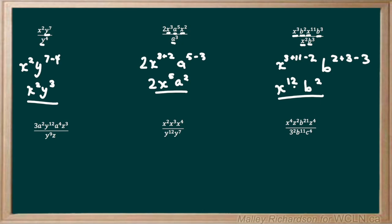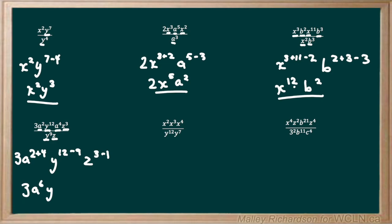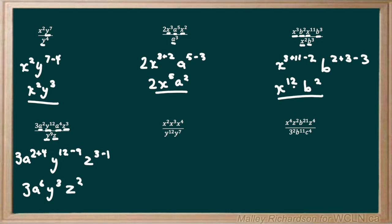For the next example we have 3 times a to the 2 times y to the 12 times a to the 4 times z to the 3, all over y to the 9 times z. Grouping like terms: the two a's share a base, the two y's share a base, and the two z's share a base. The 3 stays the same. For a it's multiplication so we add: 2 plus 4 equals 6. For y and z it's division so we subtract the exponents. We're left with 3 times a to the 6 times y to the 3 times z to the 2 as our final answer.